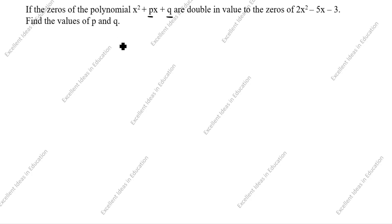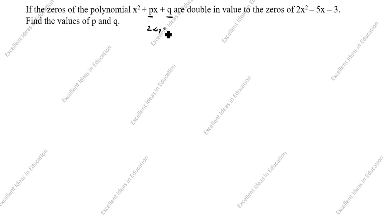What is given in this question? The equation 2x squared minus 5x minus 3 is given. First we will find the alpha, beta values. After doubling, we will take these as 2 alpha and 2 beta. Here alpha and beta are the original zeros.